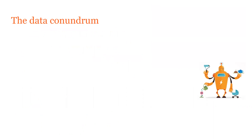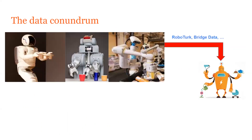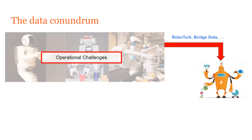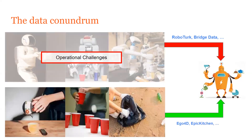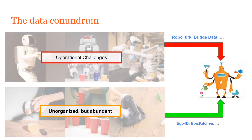We want robots to be a generalist agent and solve a lot of different tasks in different environments. However, collecting a large amount of robot data at this scale is infeasible because it requires a lot of manual effort. On the other hand, videos of humans doing everyday activities are abundant on the internet, including curated datasets like Ego4D and Epic Kitchens that contain hours and hours of human interaction.